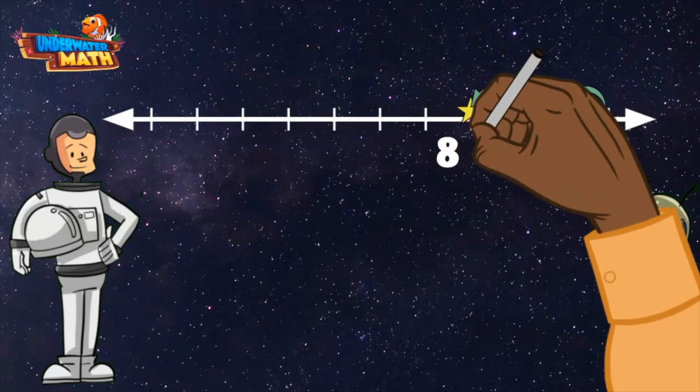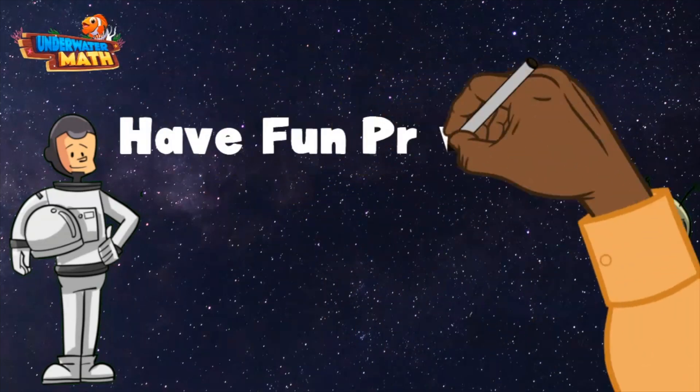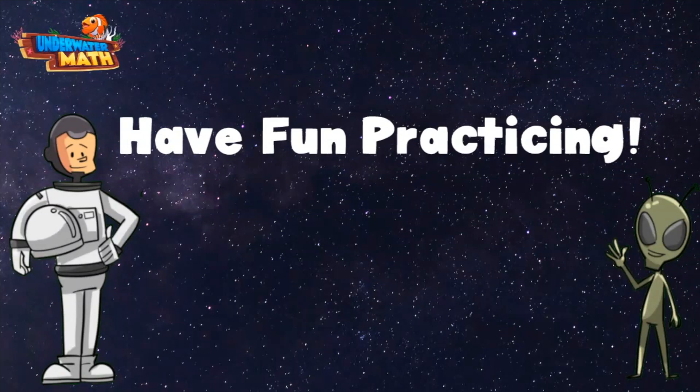874, 873, 872. The star represents 872. Hey, that was easier than I thought! All right space kids, you are ready to try this out on your own. Have fun!